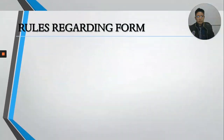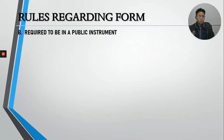In contracts of antichresis, the amount of the principal and also the interest shall be specified in writing, otherwise the contract shall be void. That is what we must remember about antichresis. Now, moving to letter B — here, not only is the agreement required to be in writing, it is also required to be in a public instrument. It must not only be written down but also notarized before an attorney.